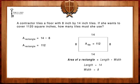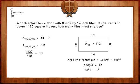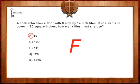If the contractor wants to cover a floor that is 1,120 square inches, we are going to divide 1,120 by 112. 1,120 divided by 112 equals 10. Therefore, it will take 10 tiles to cover the floor — answer F.